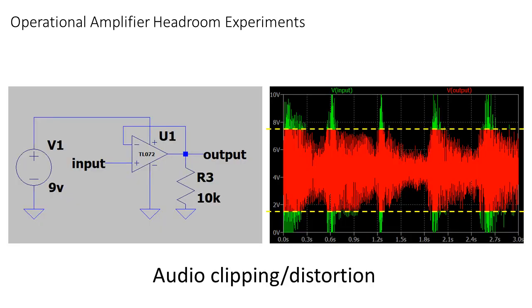If you want to process audio, first make sure what the maximum peak-to-peak voltage is of the input signal. Otherwise, you will get clipped and distorted output, which will not sound pleasant.